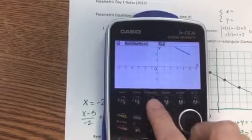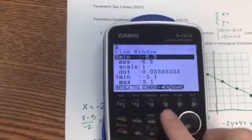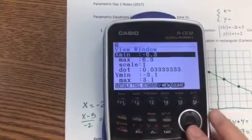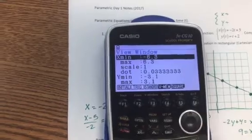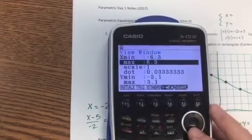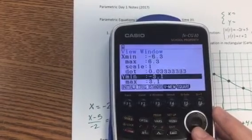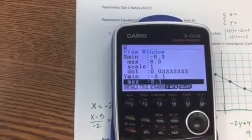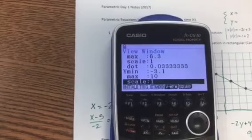And one of the things with parametric is you've got your x and your y, and let's make this, yeah, negative 6.3, 6.3, that should be fine. But let's get some larger y values, maybe we'll go to positive 10.